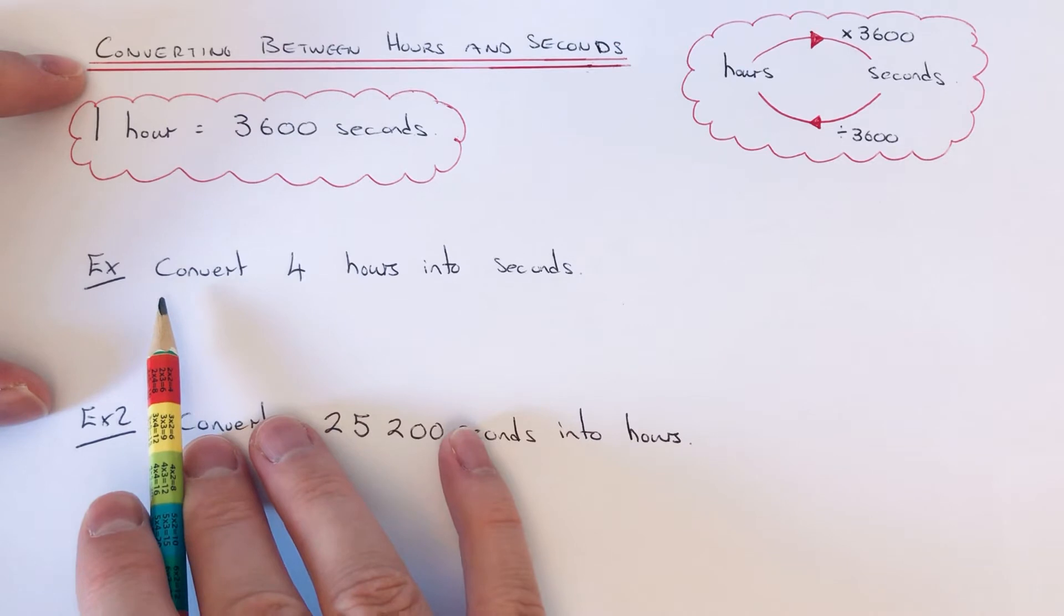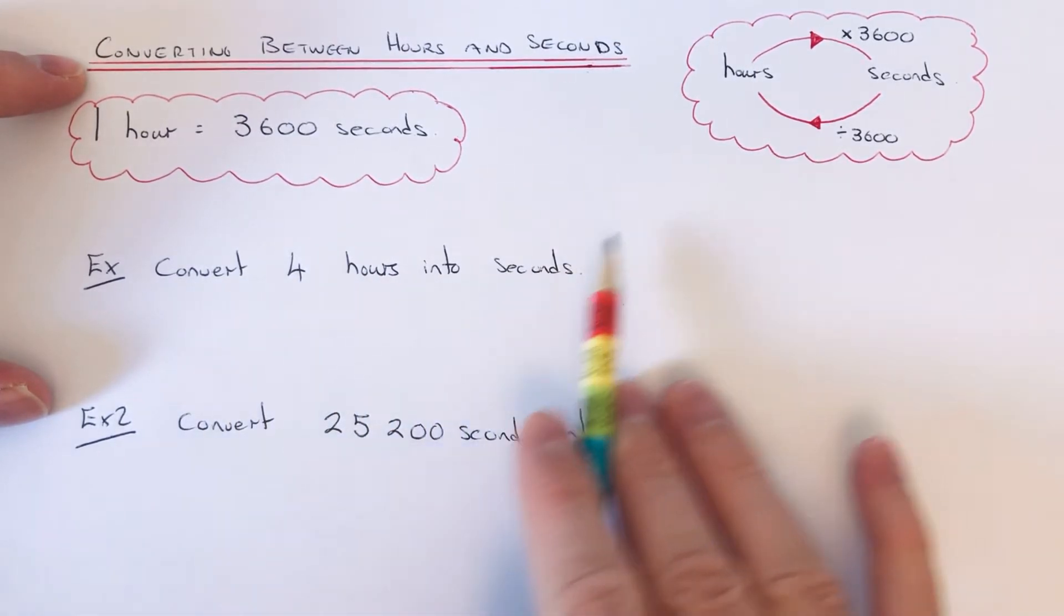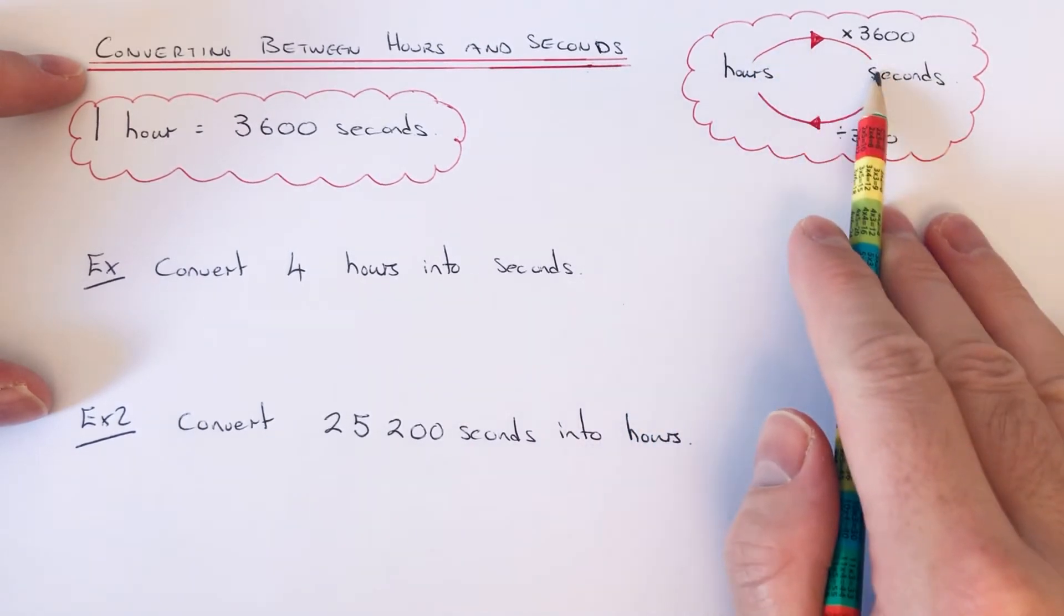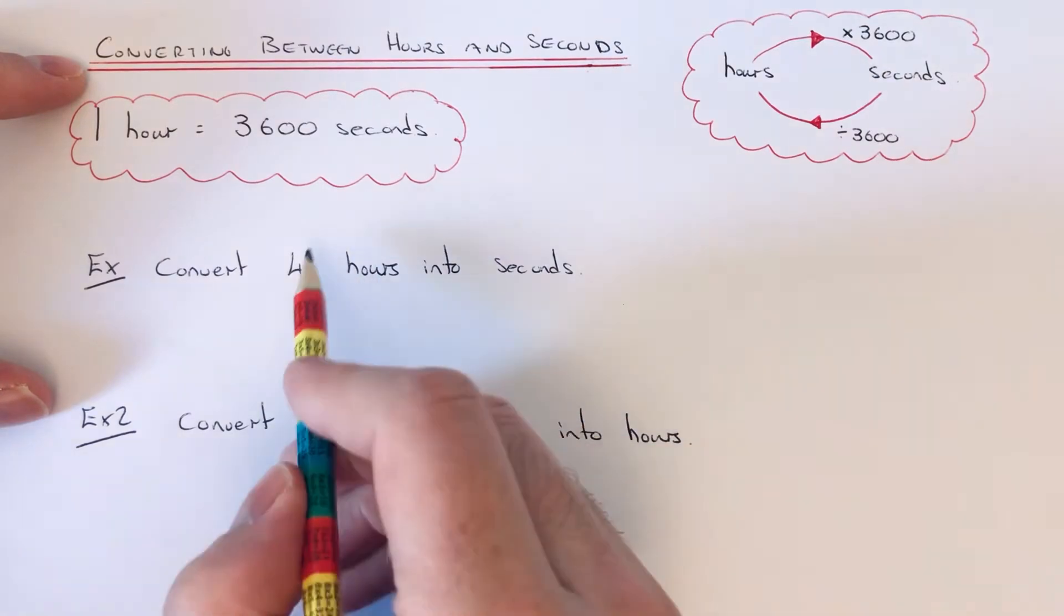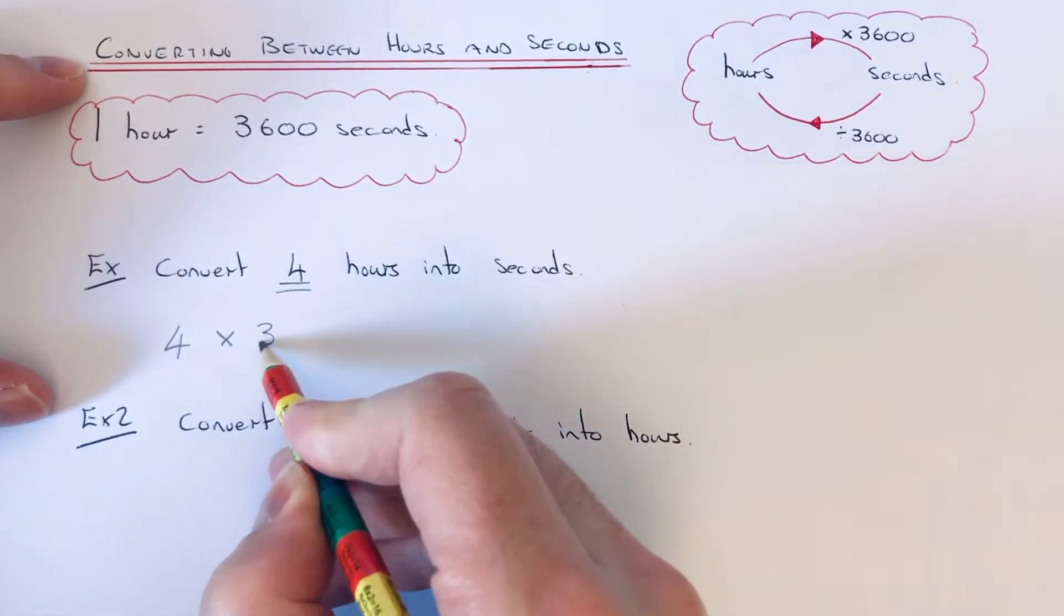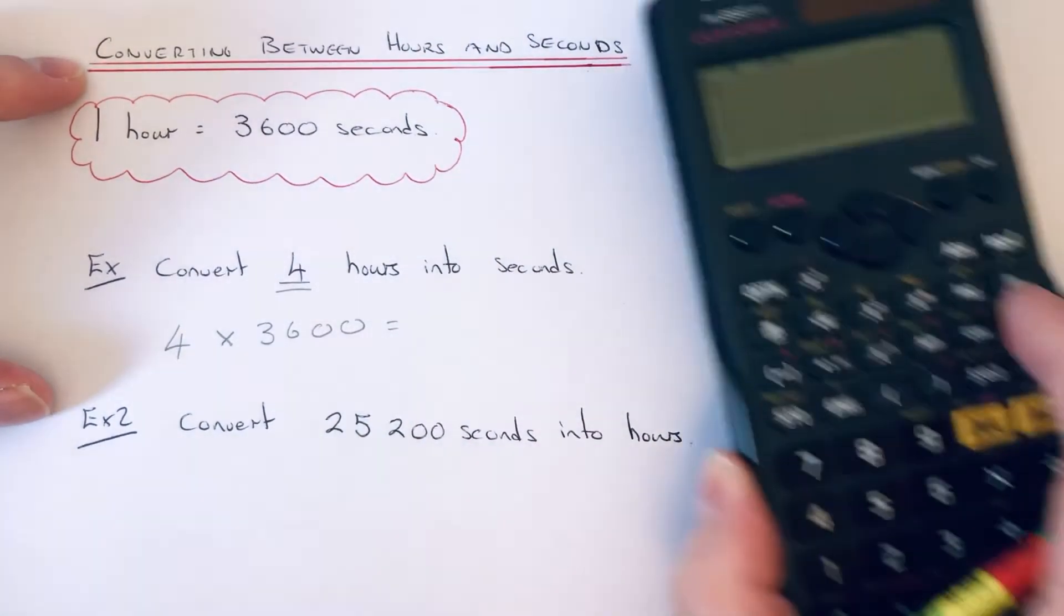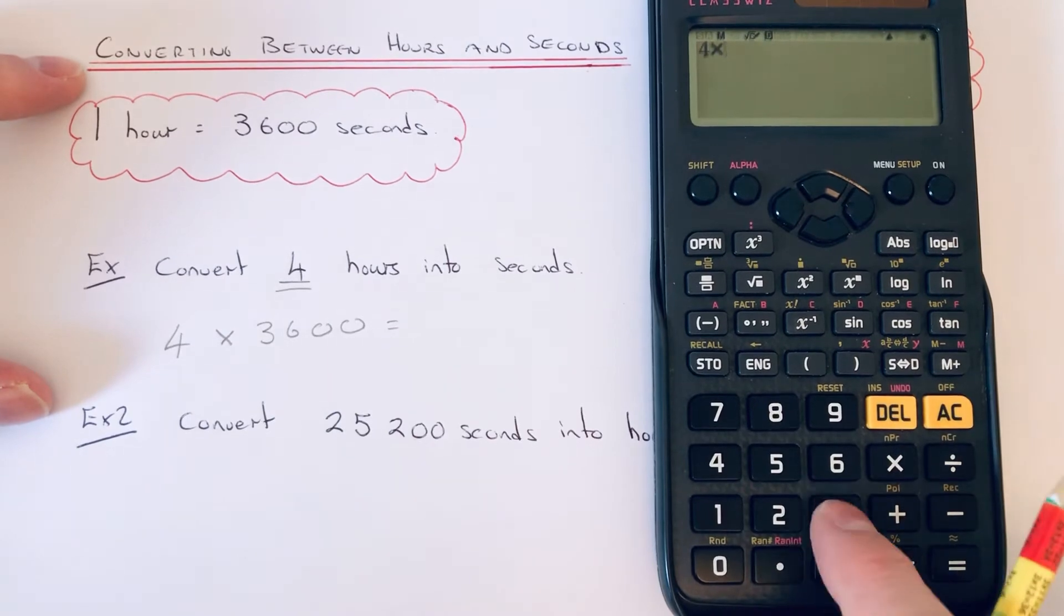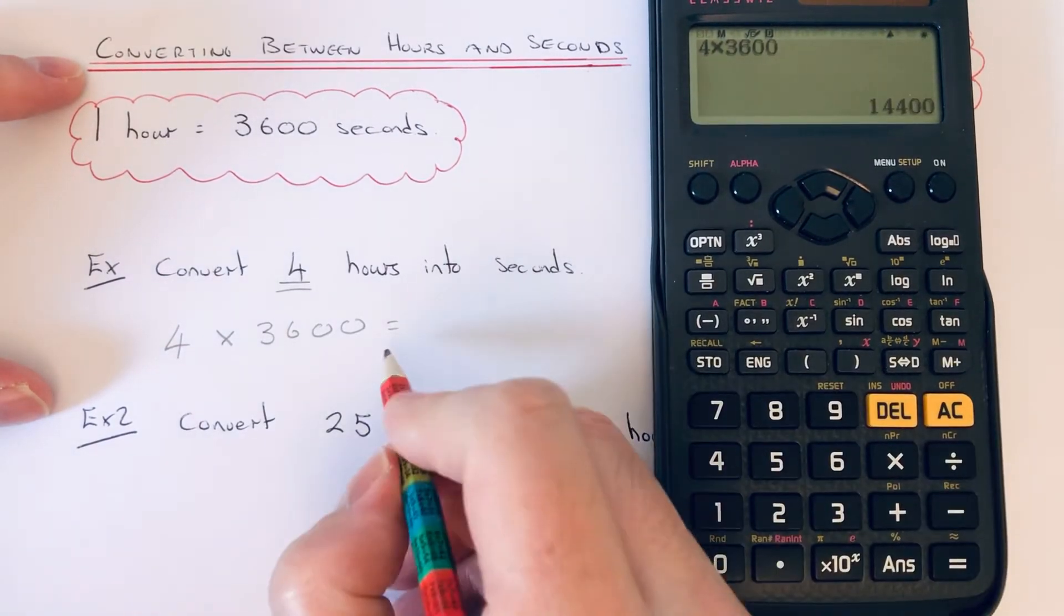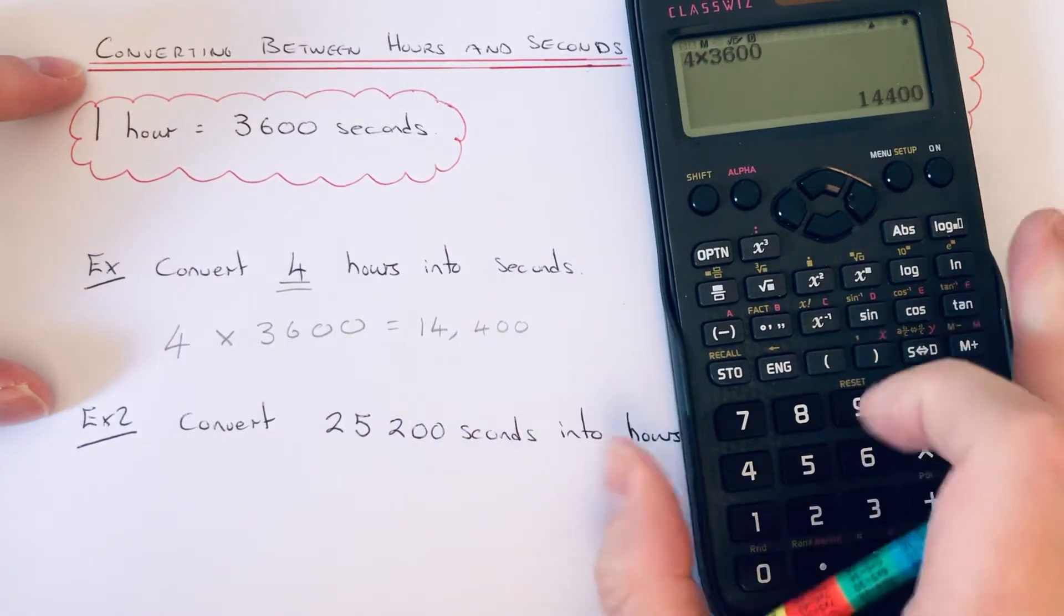Example one: we need to convert four hours into seconds. So to get hours into seconds, you multiply the number by 3600. So if you write down the four first, and we're going to times that by 3600, four times 3600 is fourteen thousand four hundred seconds.